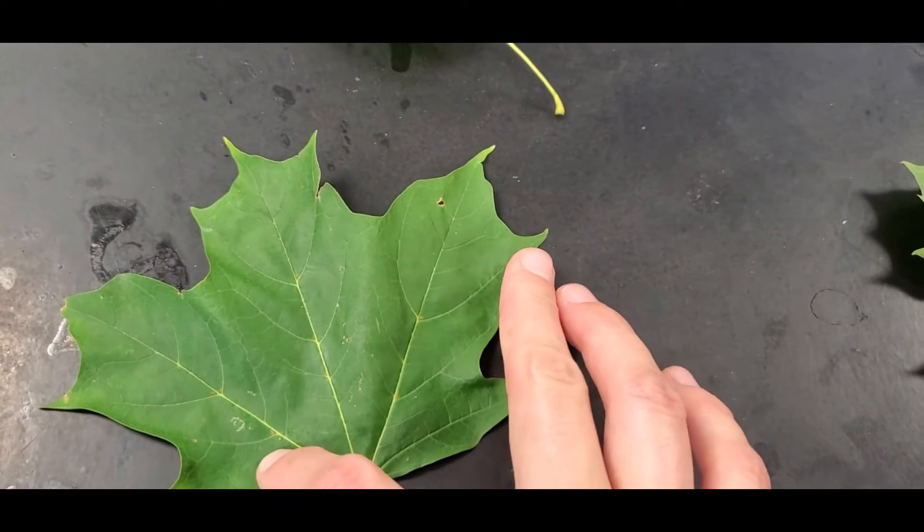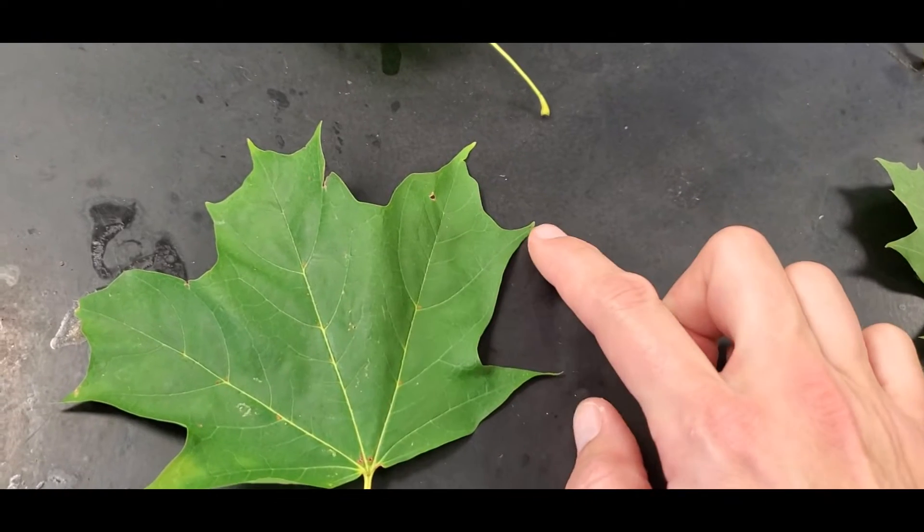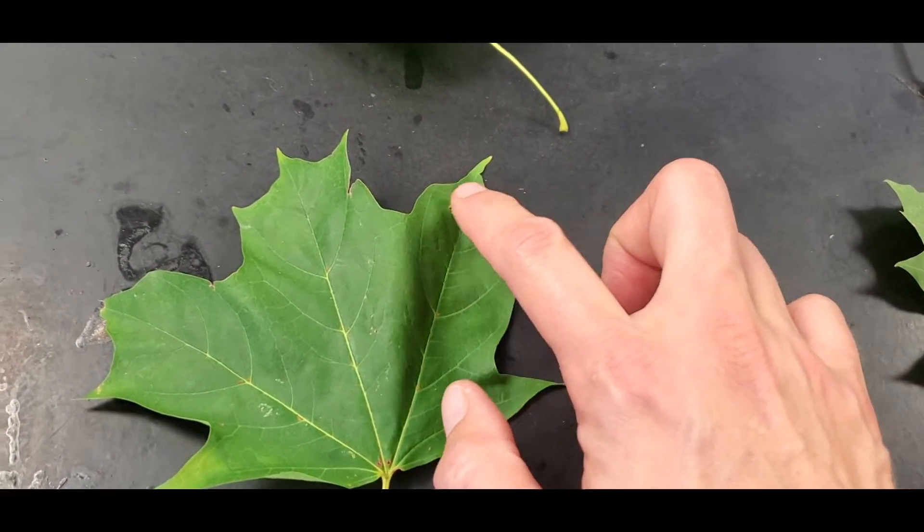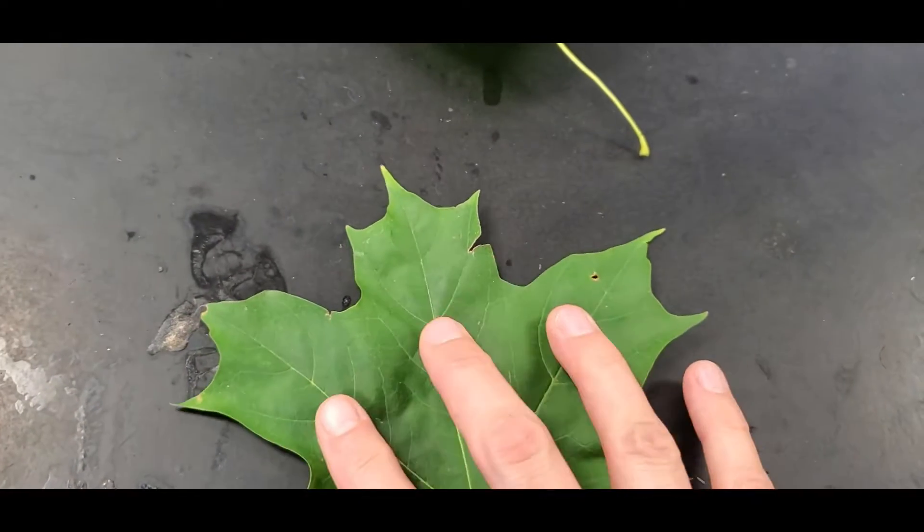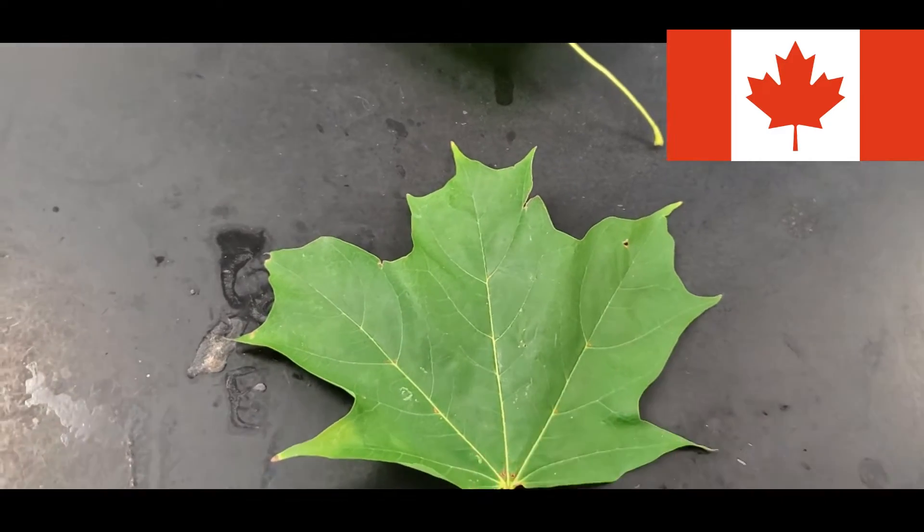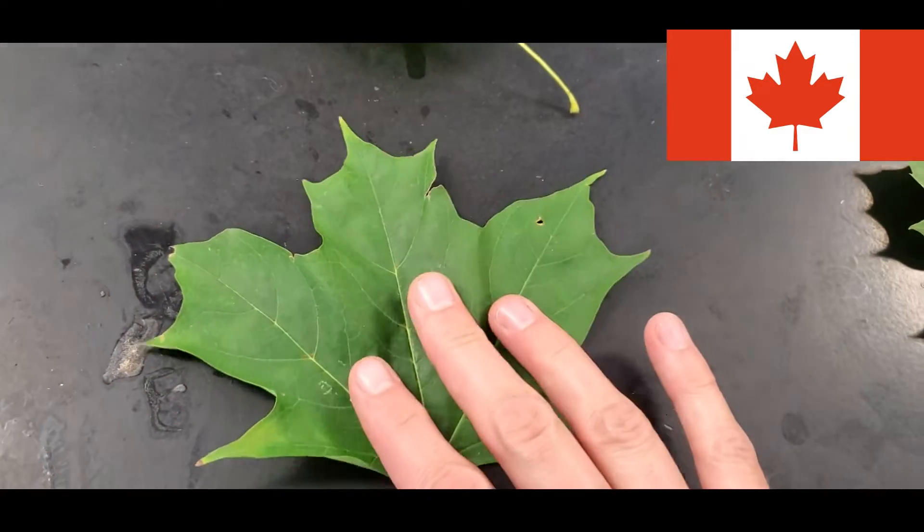Notice that there's no teeth. At least the only teeth are these little points right here. There's no teeth along the way. So the margin is pretty much entire. This is the national flag of Canada. So if you recognize that, that is what's on the flag.